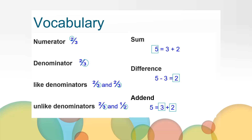You will hear these words today in the lesson. As I read and describe each one, think about whether this is a new word for you or a word you've heard before. The numerator is the number above the fraction bar. The denominator is the number below the fraction bar that tells us how many parts make one whole. Like denominators are two or more fractions that have the same denominator. Unlike denominators are two or more fractions that have different denominators.